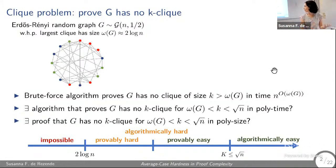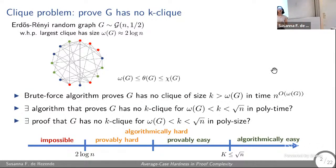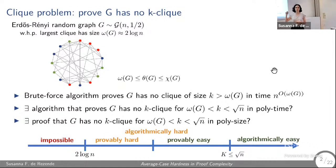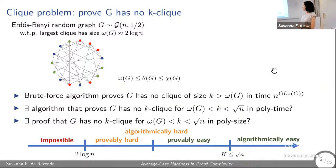The reason this isn't a clean separation between the algorithmic and proof complexity problems is that we can compute the Lovász theta function, which sits between the coloring number and the clique number. This already gives a proof that there is no clique of that size, so algorithmically, if the graph is three-colorable, I can algorithmically prove there's no clique of size four.